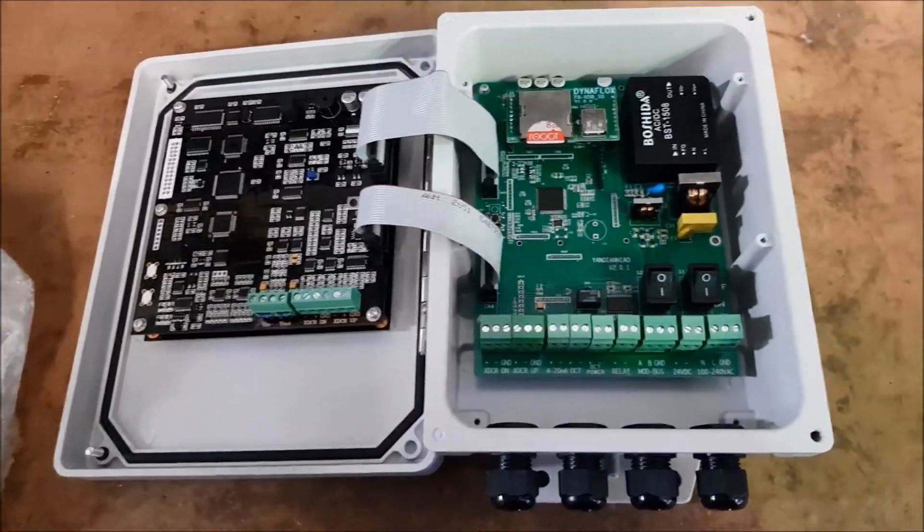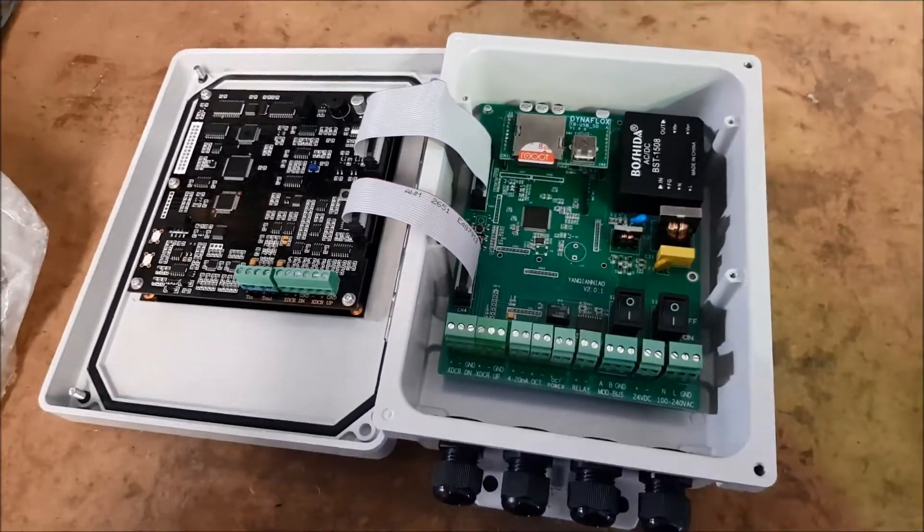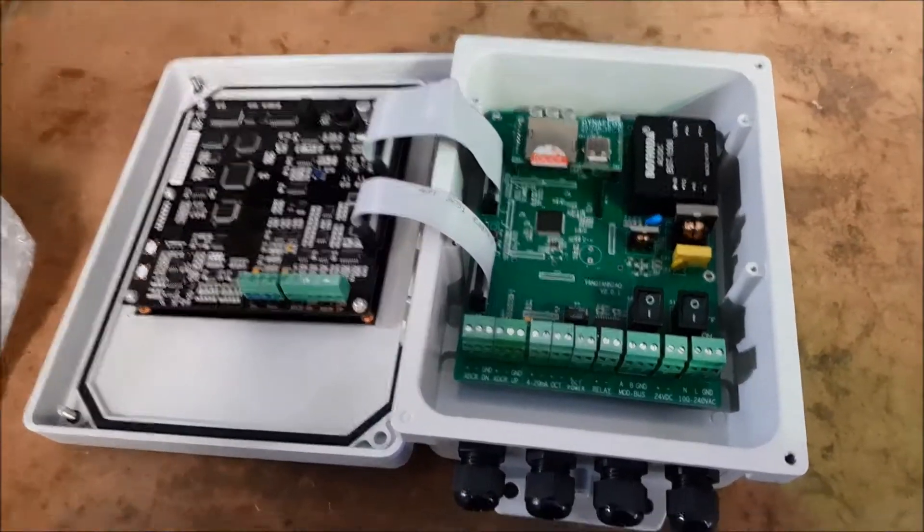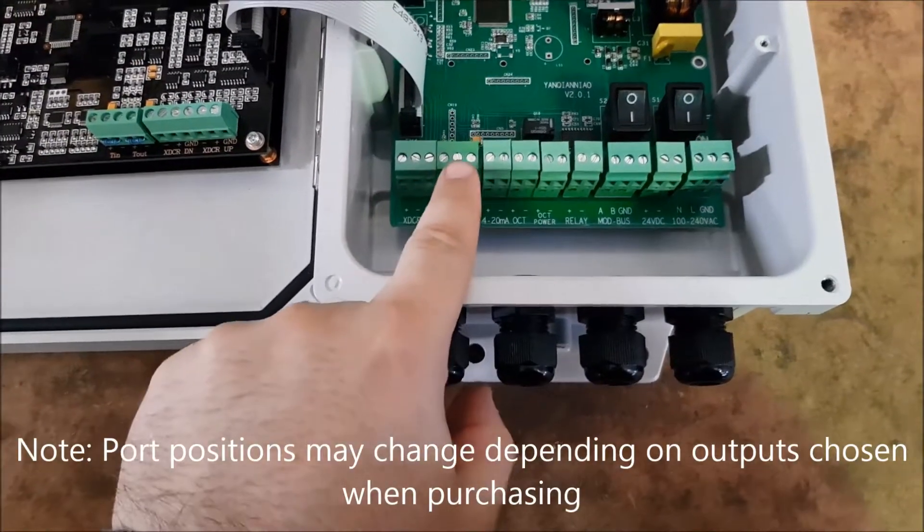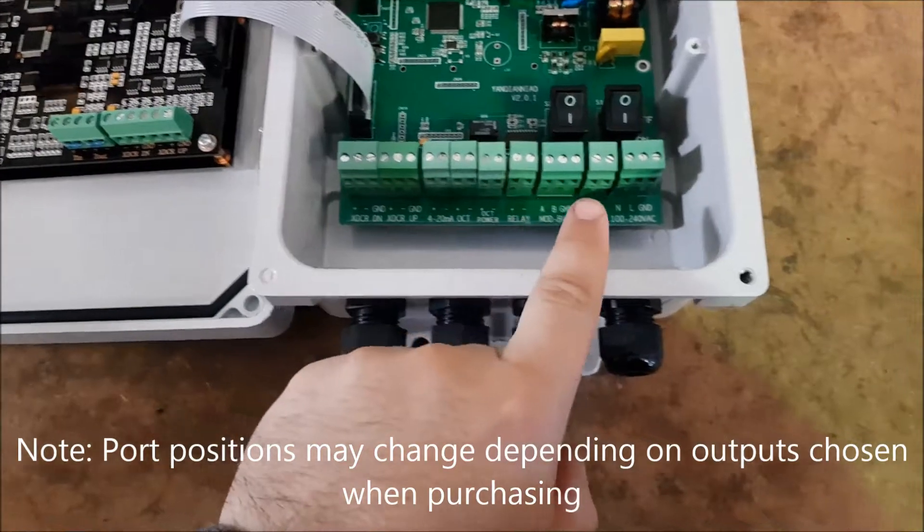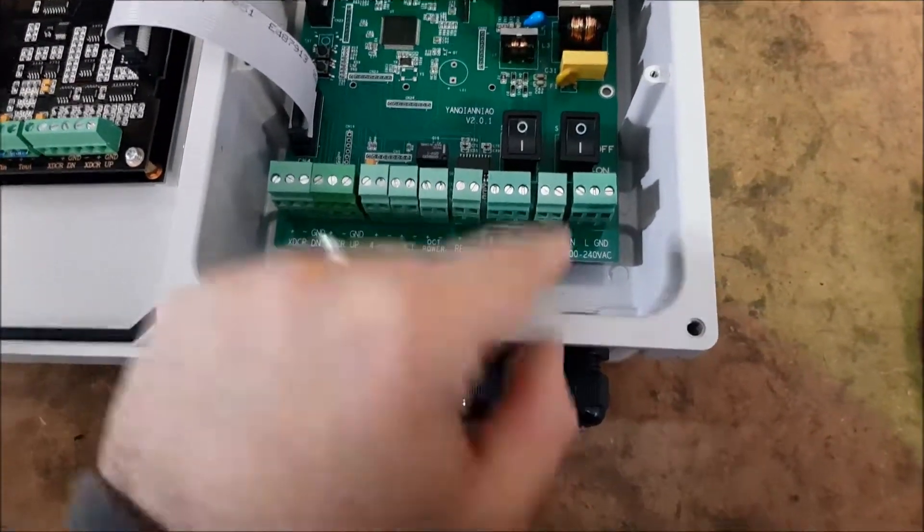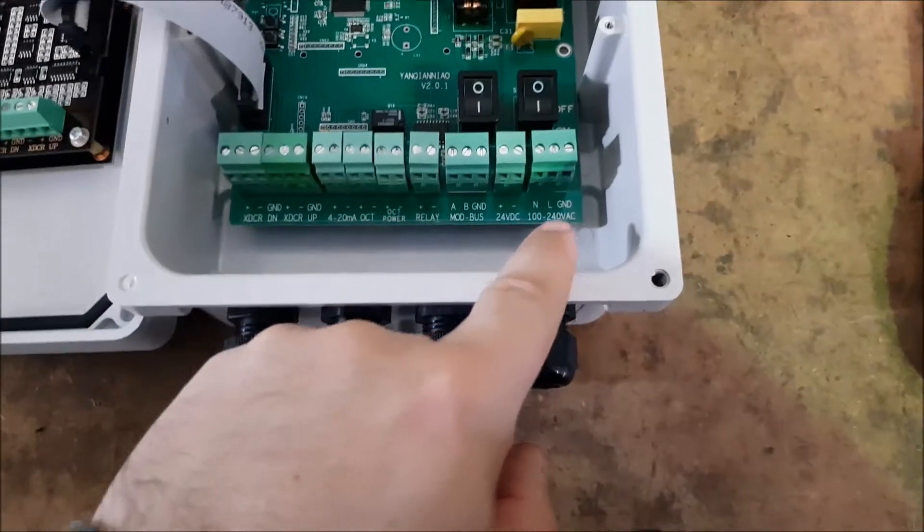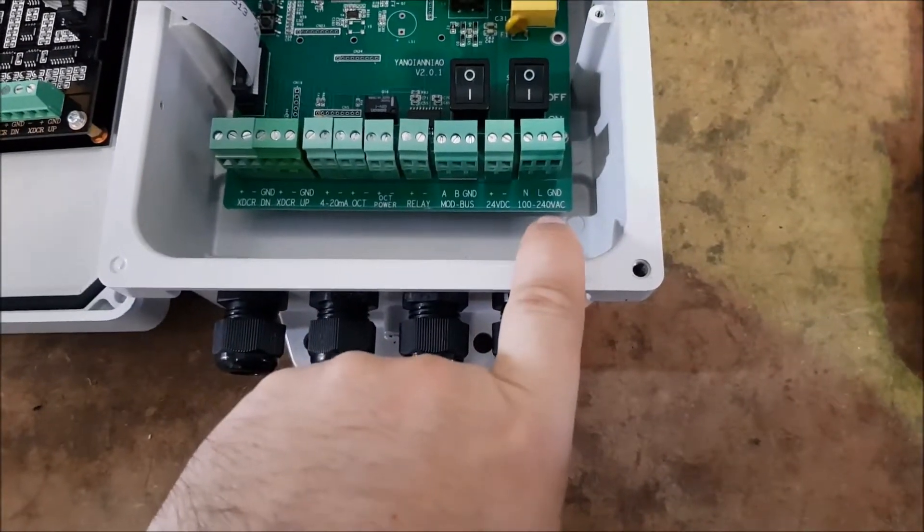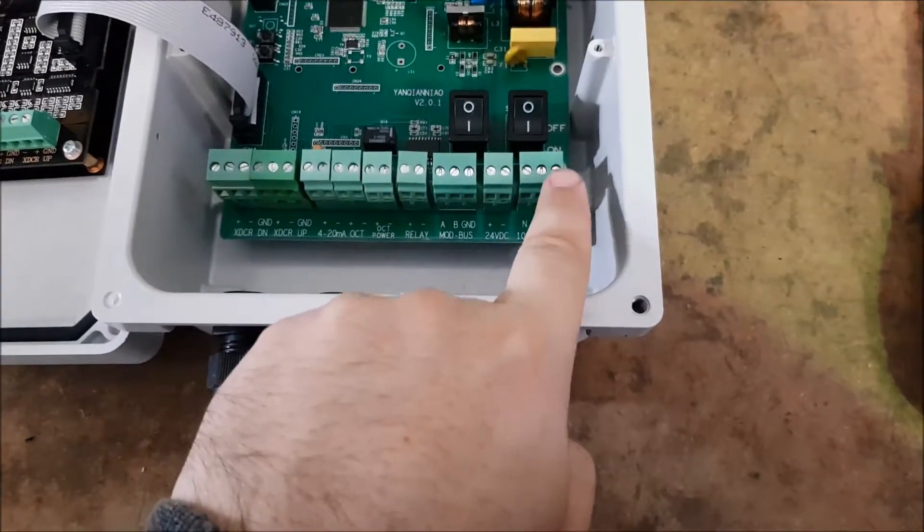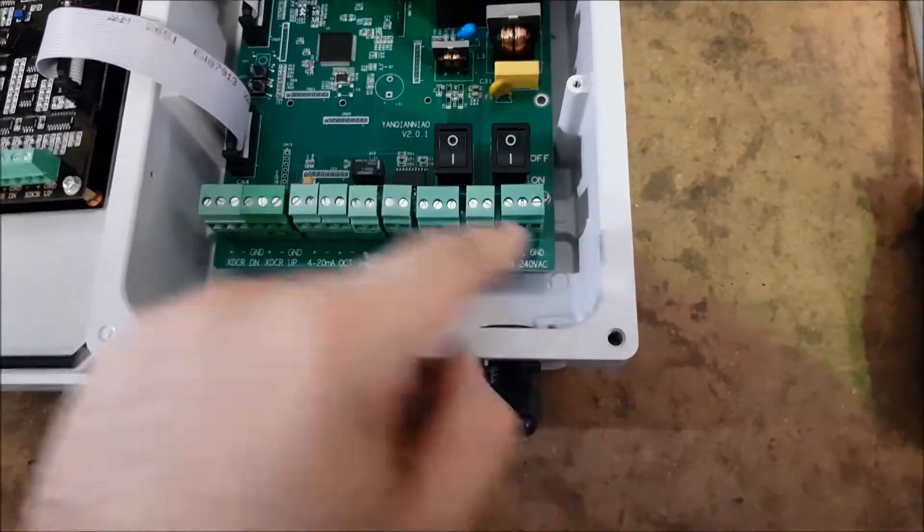On the inside, we have to make some connections. So first of all, your transducers both up and downstream will go into these ports here. And you'll also need to power the unit. Now you can power it either with 24 volt DC through this one here, or you can use standard mains power and get an electrician to connect that up into here.